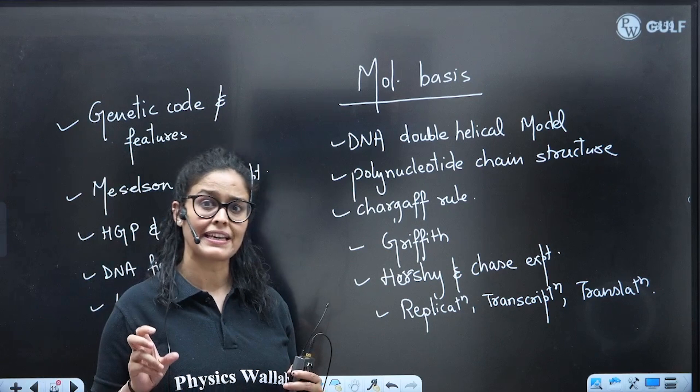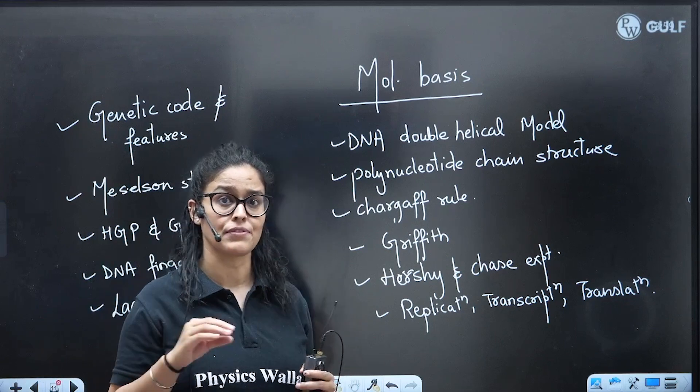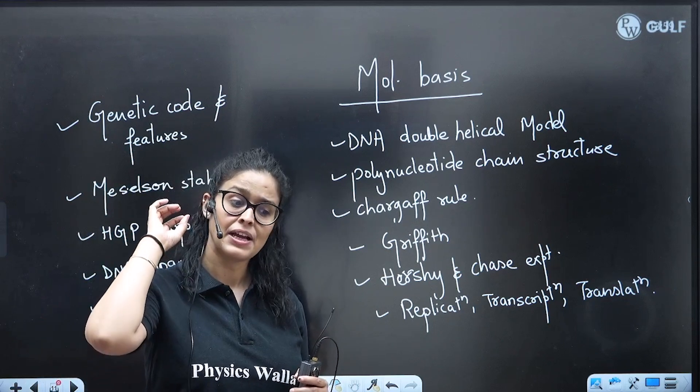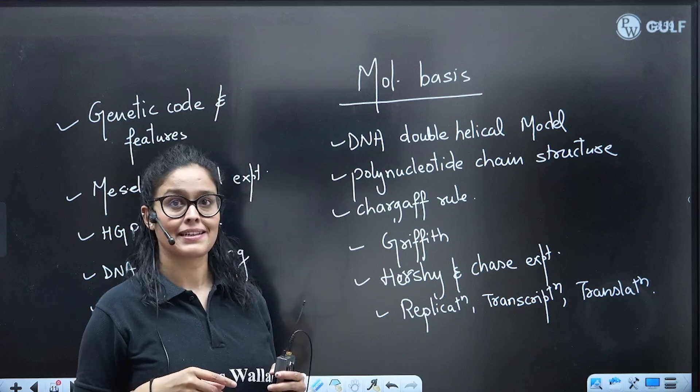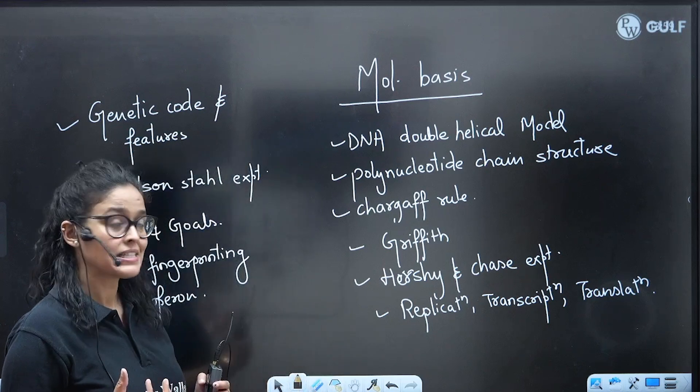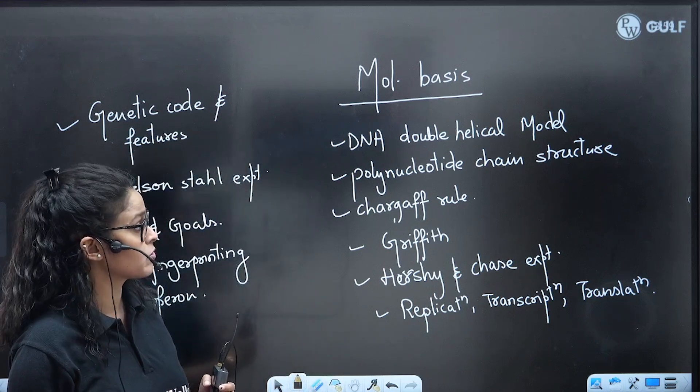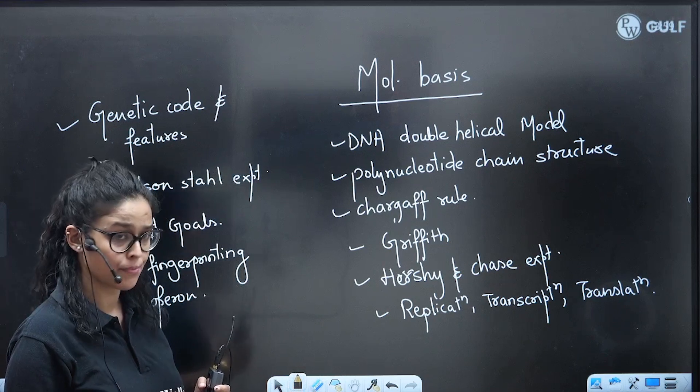From Molecular Basis of Inheritance, if we see the 5 to 7 years previous question papers, you will find they have asked questions from almost all topics. If you see DNA double helical model or polynucleotide chain structure, they have asked questions from here.